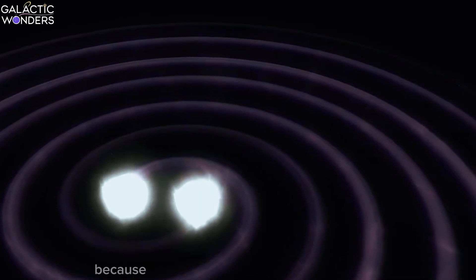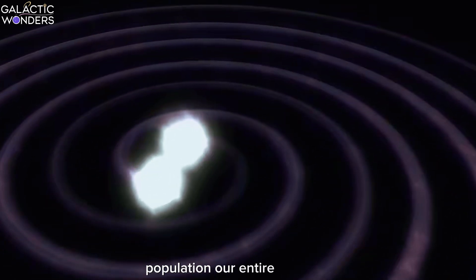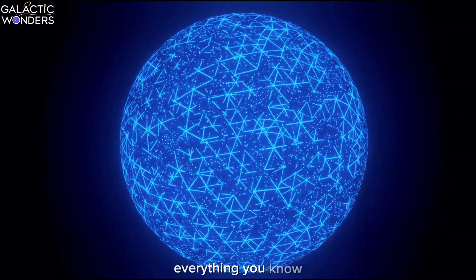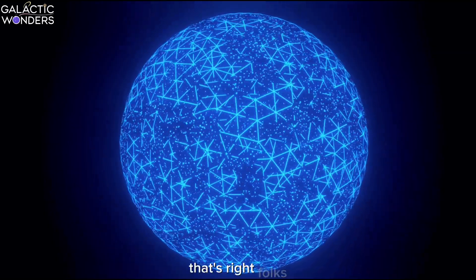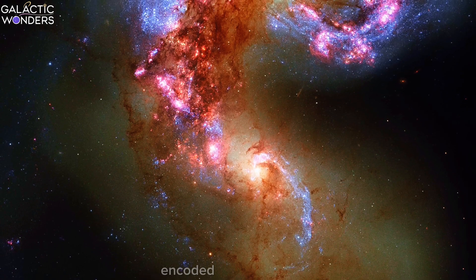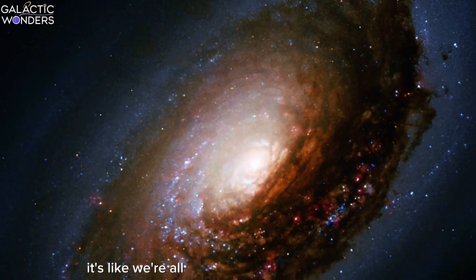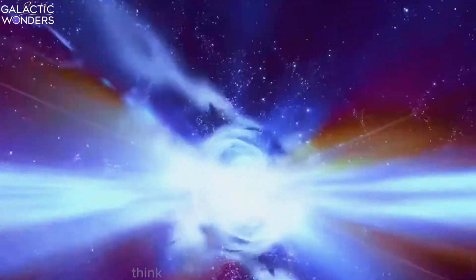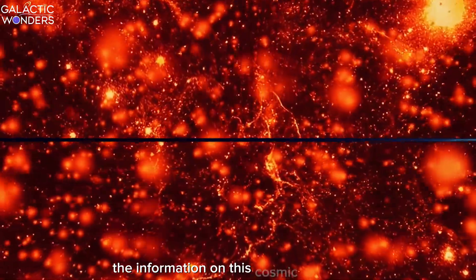Now, brace yourselves, because we're about to take a trip to Weirdville. Population. Our entire universe. What if I told you that everything you see, everything you know, everything that exists might just be a giant hologram? That's right, folks. The holographic principle suggests our 3D universe might actually be encoded on a 2D surface somewhere out there in the cosmos. It's like we're all living in the ultimate IMAX movie, projected from the edge of the universe. Think about it. Every time you move, every time you breathe, you might be changing the information on this cosmic hard drive. It's like we're all characters in the most complex video game ever created.